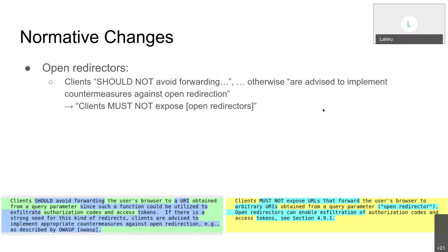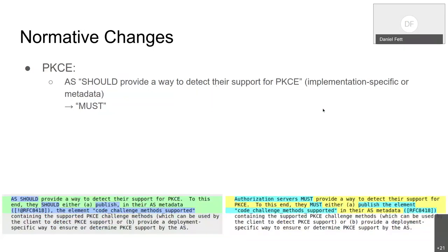Regarding PKCE: we had 'an AS should provide a way to detect their support for PKCE,' where they should either use metadata or provide a deployment-specific way to determine PKCE support by the authorization server. We made that a must, because knowing whether a server supports PKCE or not is really important — you can then rely on PKCE also for cross-site request forgery protection.